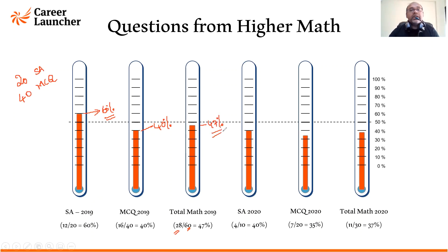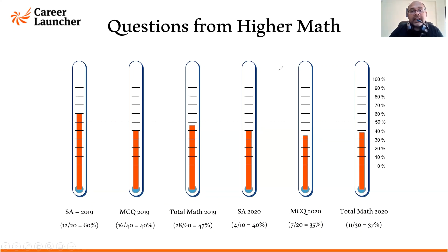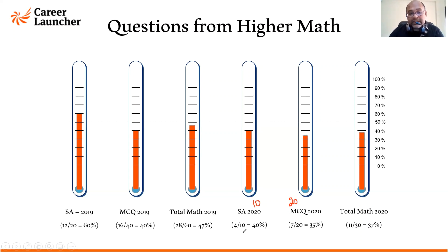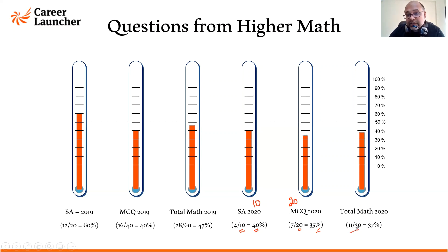In 2020, however, because of COVID, the total duration of the exam and number of questions were decreased. The short answer section went from 20 questions to only 10, and the MCQs from 40 to only 20 questions. In that reduced paper, 40% and 35% respectively came from Higher Maths. Overall, out of 30 questions, just under 40% were from Higher Maths.